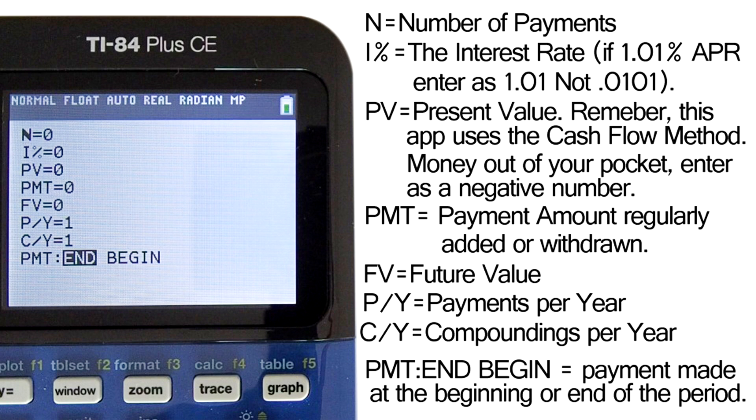PMT, payment, is for the amount of regular payments being added or withdrawn into or out of the account. For example, if every month you take $100 out of your pocket to fund the account then enter a negative 100 here.